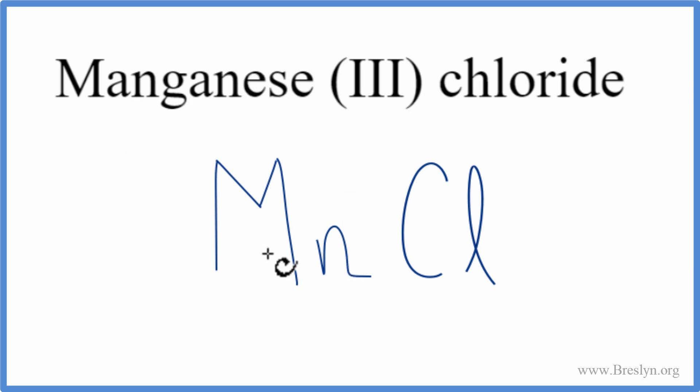Manganese, that's a metal, it's a transition metal. Chlorine, that's a non-metal. So of a metal and a non-metal, that means this is an ionic compound.